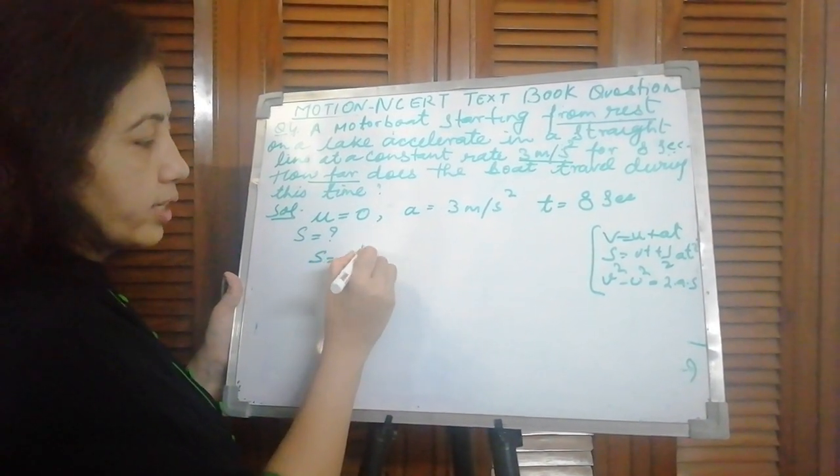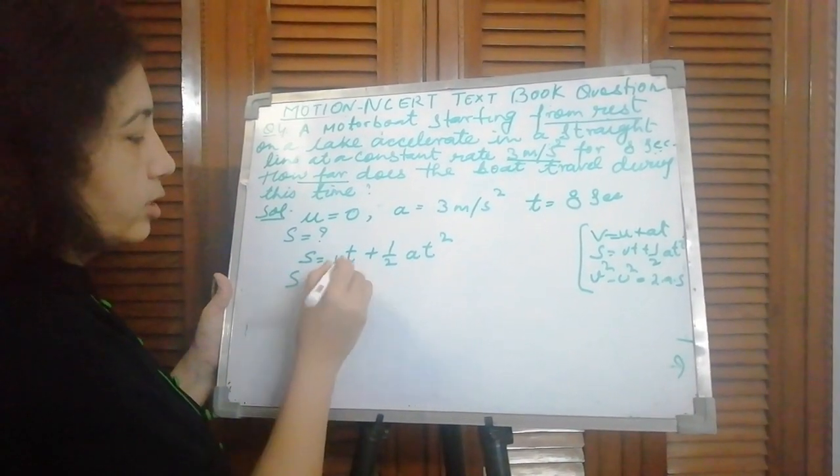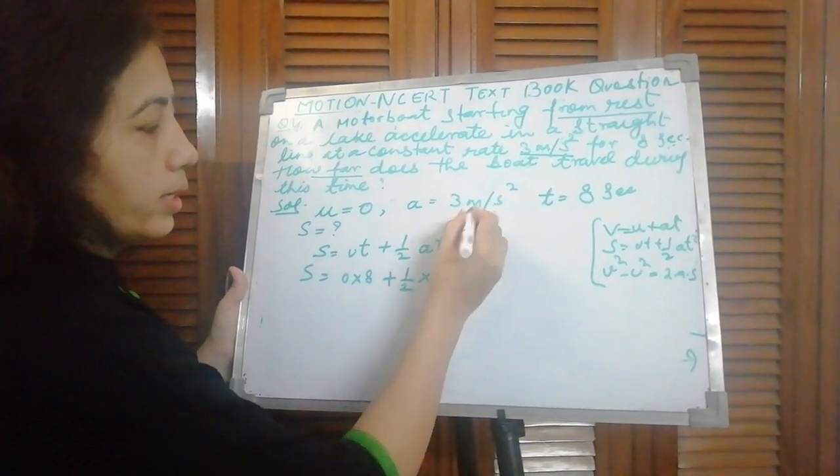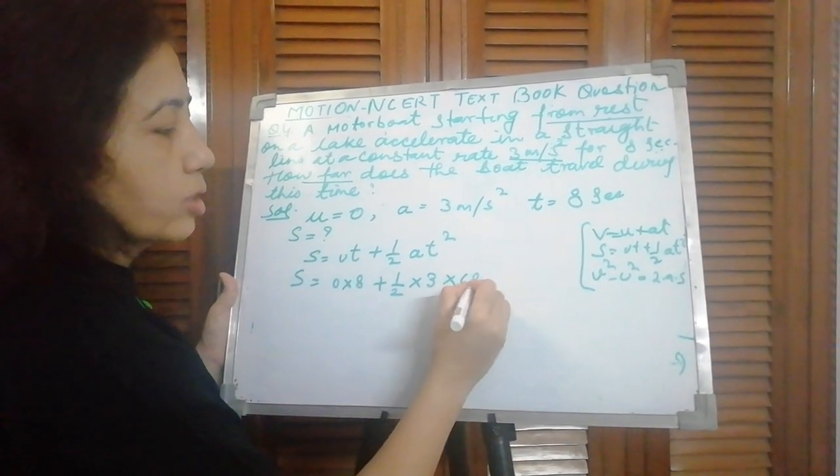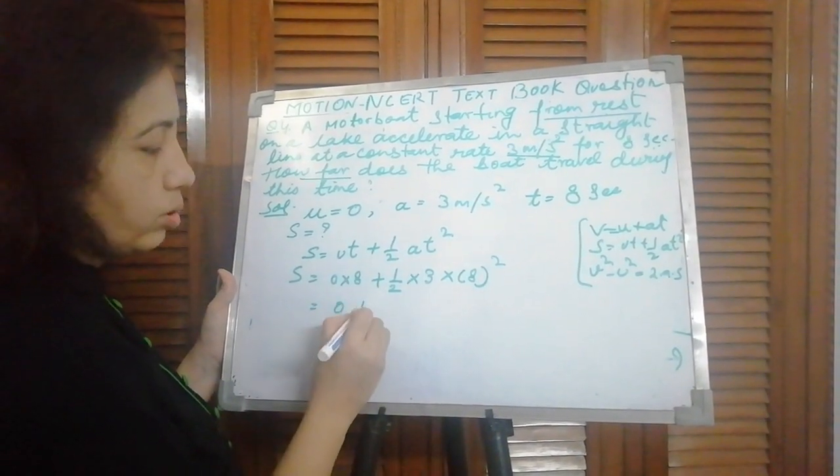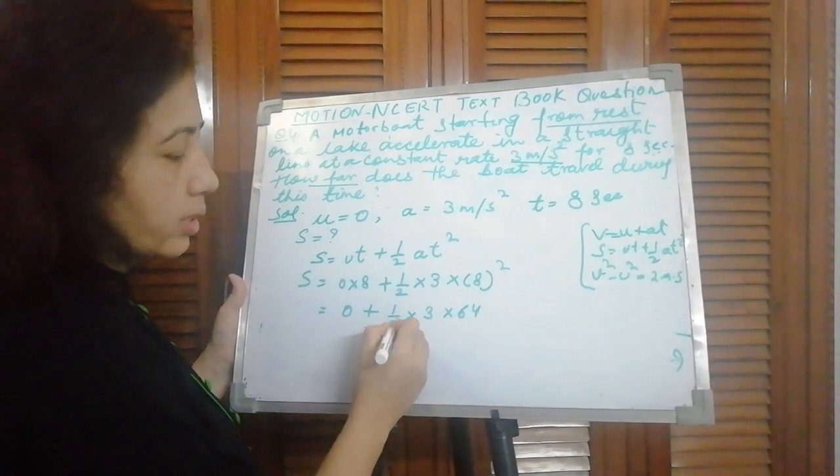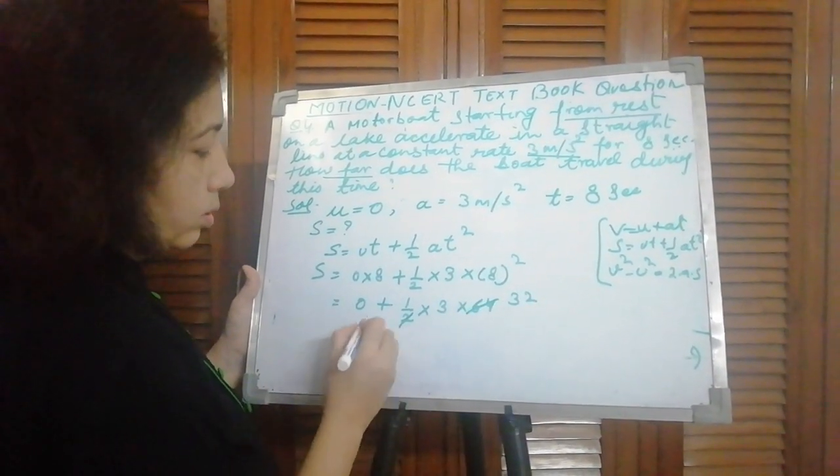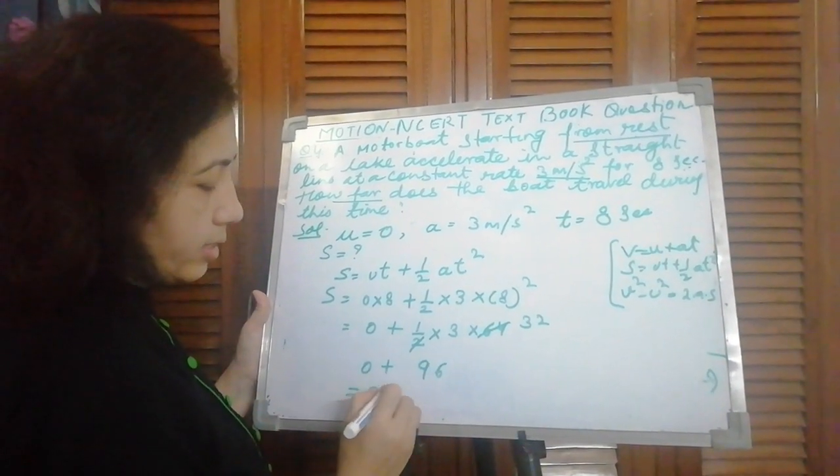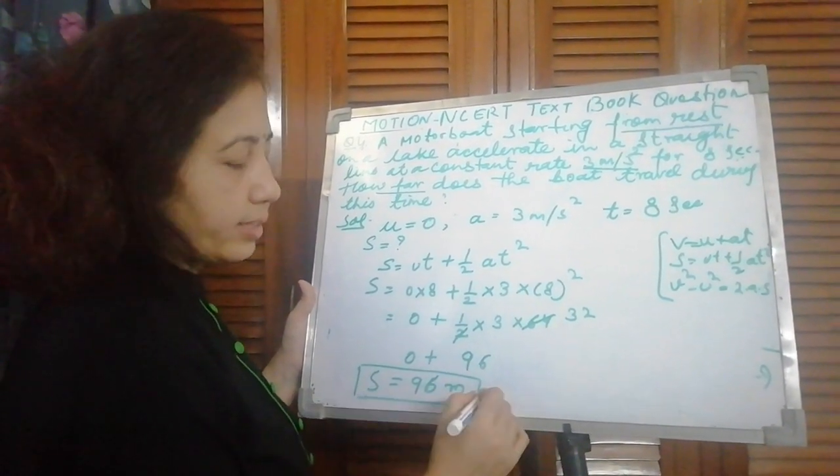So S equals ut plus half at square. S: u is 0, 0 into time 8 plus 1 by 2, a is 3, time is 8, 8 squared. Always remember you have to square this. 0 into 8 is 0, 1 by 2 into 3, 8 squared is 64. Cancel it: 32. Then 0 plus 96. Answer is 96. At the end you have to write the unit meter. So distance traveled is 96 meters.